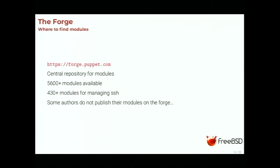Where do you find these modules? Puppet Labs has the Puppet Forge, a central repository with more than 5,000 modules available. There is sometimes redundancy — more than 400 different people wanted an SSH module and created one. For many interesting projects there are far fewer modules, but for Apache you'll still find dozens. So don't write your own modules because modules should be as abstract as possible. If you don't find what you're looking for on the Puppet Forge, it's worth checking the rest of the internet, as some authors don't publish there.